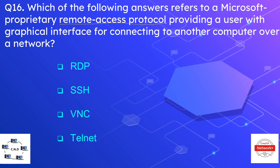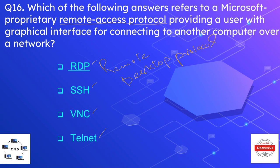Question number sixteen is: which of the following refers to a Microsoft proprietary remote access protocol providing a user with a graphical interface for connecting to another remote computer or network? The options are RDP, SSH, VNC, or Telnet. The correct option is RDP, or Remote Desktop Protocol — a Microsoft proprietary protocol used to connect to a remote computer using a graphical interface, typically on port number 3389.